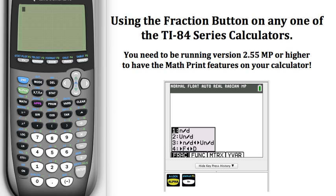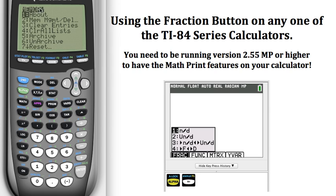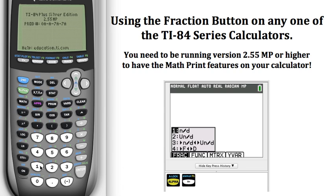To check that out, to make sure my calculator is running that, I'm going to hit the second button and then I'm going to hit the plus. A little menu comes up here. I have a choice that I can choose number one for about. I'm going to press one, and then it does tell me I am running 2.55 MP.